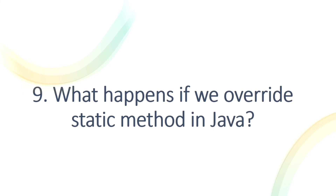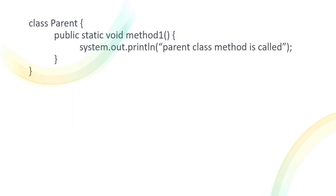What happens if we override a static method in Java? There won't be any compilation error or runtime error, but let's see with an example. A ParentClass has a static method methodOne() that prints 'parent class method is called', and a ChildClass extending ParentClass also has the same static methodOne() printing 'child class method is called'.